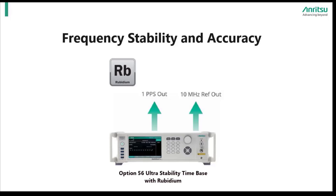Option 56 features a Rubidium timebase which provides an order of magnitude better frequency stability and accuracy than an OCXO reference, while still maintaining test and measurement quality phase noise. This option provides atomic clock frequency stability and accuracy. This performance can also be used to tie other signal generators to an accurate atomic frequency reference, accomplished through a 10 MHz reference output or 1 PPS output signal.